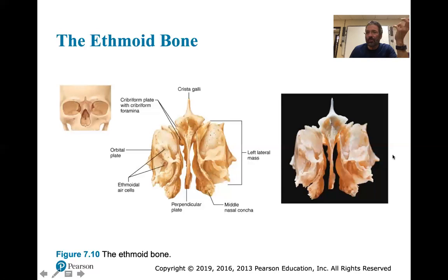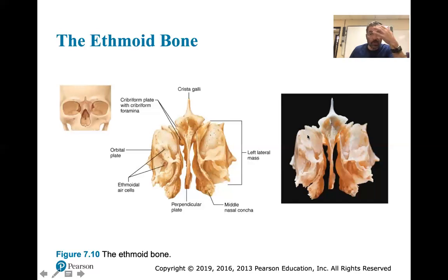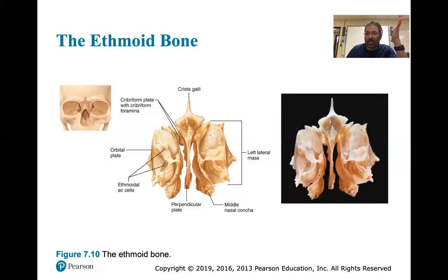Just realize what's going on in the ethmoid bone - it's in the middle of your face where your sinuses are, with conchae and lateral masses. Here is your crista galli where the dura mater attaches. In violent scenarios, you can break someone's nose and shove the cribriform plate portion up right into the brain, causing instantaneous death.